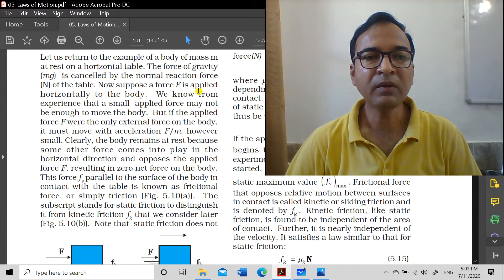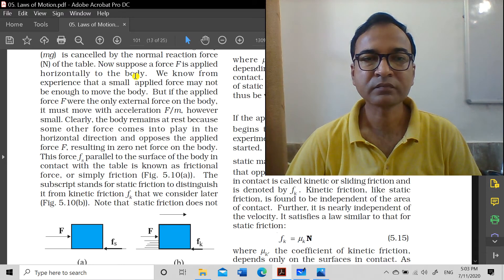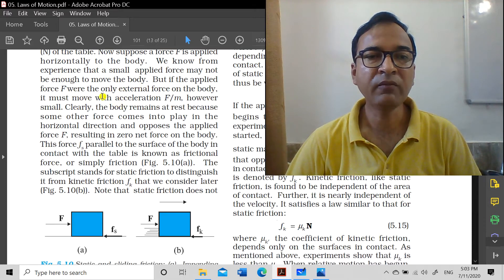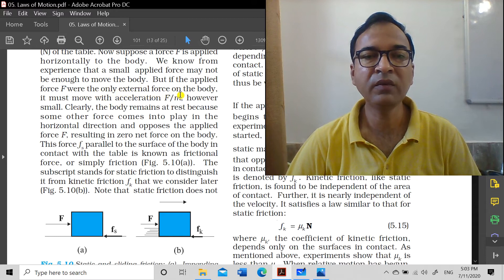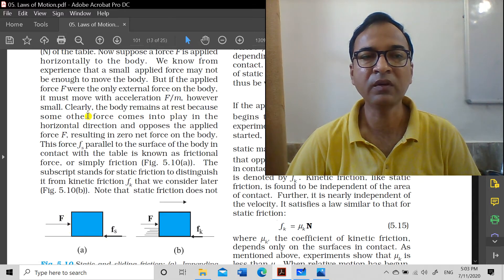Now suppose a force F is applied horizontally to the body. We know from experience that a small applied force may not be enough to move the body. But if the applied force F were the only external force on the body, it must move with acceleration F/m as we learned in Newton's second law. So look at figure A carefully.